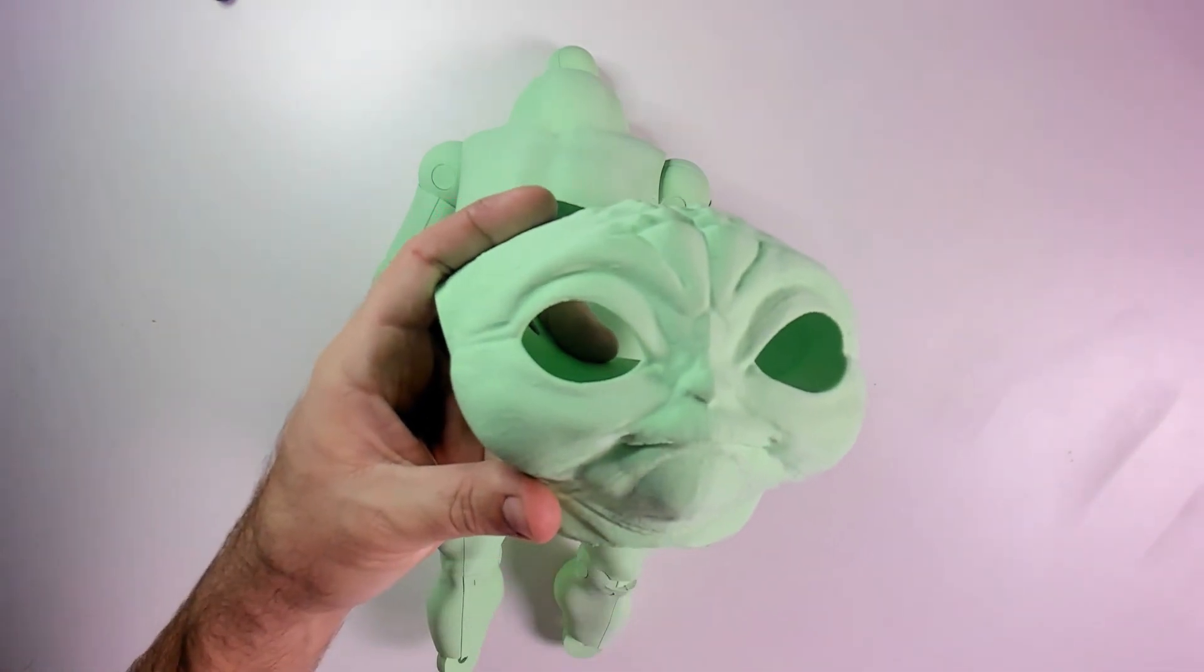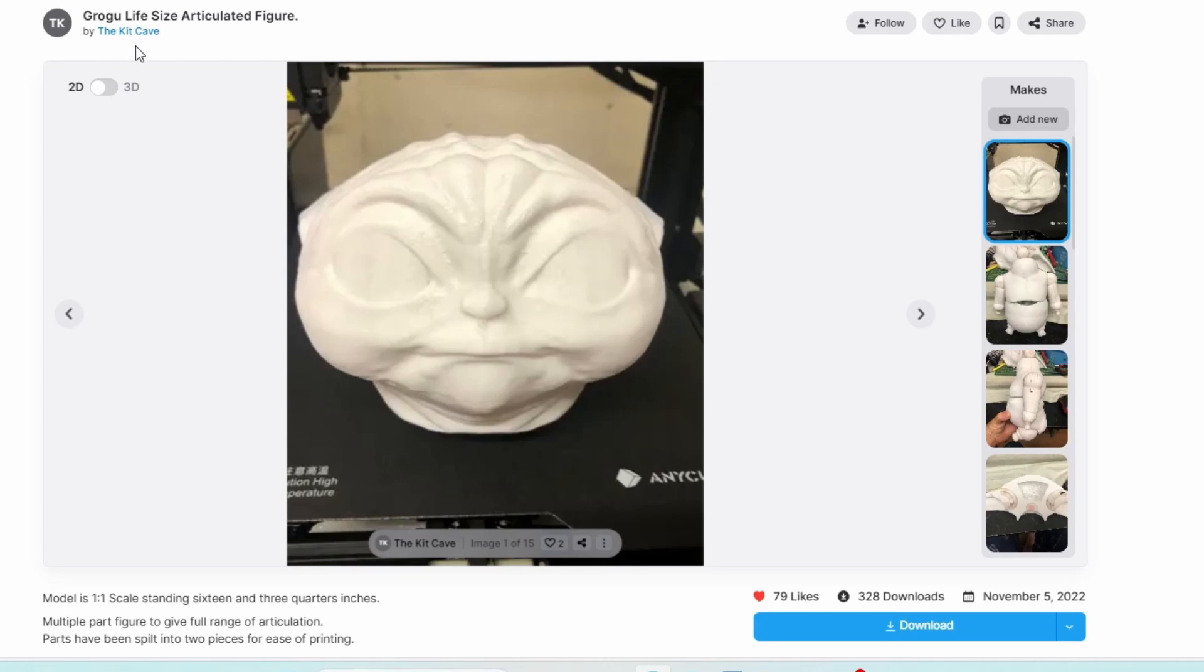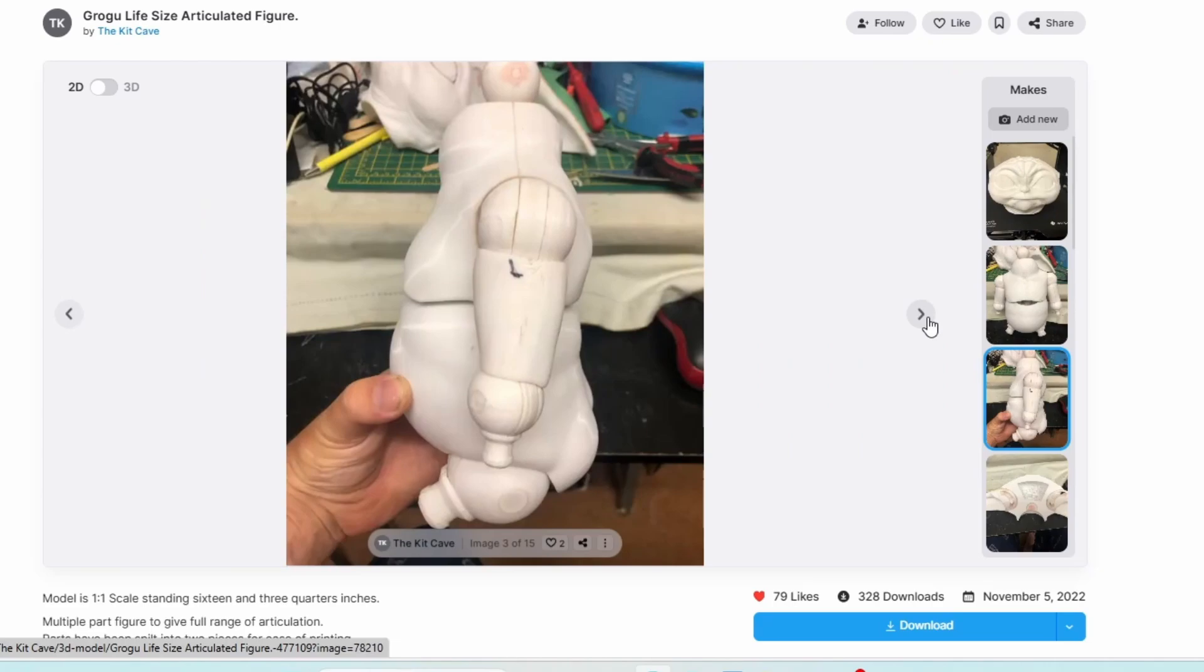Now I need to get started on the eyes and the painting for the next video. The files used in this video were done by the kit cave. You can download them on things.com. I put the link in the description. I hope you enjoyed this video, the first part of my Grogu build. Be sure to like and subscribe, and check this out next. Thank you for watching.